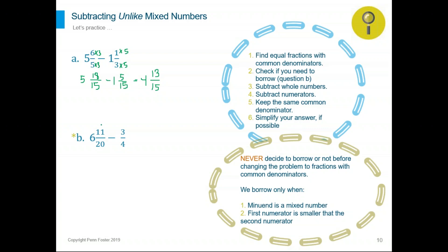Let's look at the second problem — we're subtracting unlike fractions. First step: don't judge whether to borrow yet. Change the denominators to like fractions first. I know that 20 is a multiple of 4, so 20 will not change. The second fraction will change — multiply times five to make it 20, and times five on top. Rewrite the problem: six and 11 over 20 unchanged minus 15 over 20. Now we have like fractions. Let's attempt to subtract: 11 minus 15. Well, 11 is smaller than 15, so this problem requires borrowing.